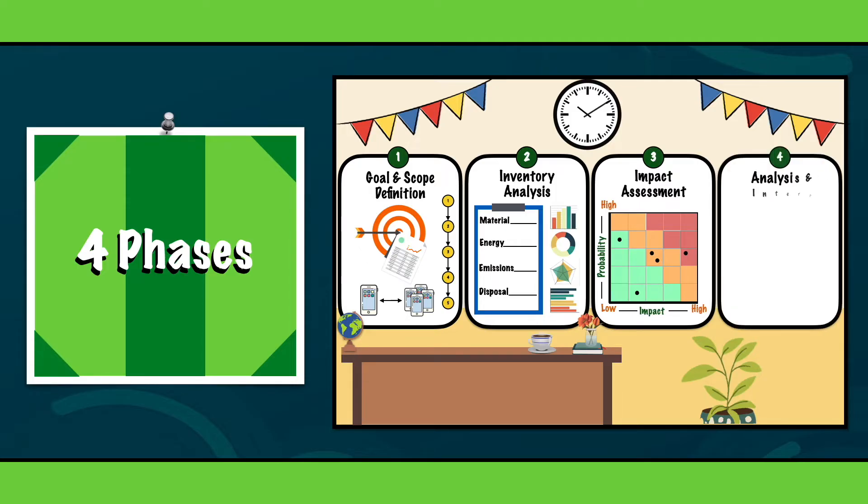Fourth, analysis and interpretation. The fourth phase involves interpreting and analyzing the findings to draw conclusions and make recommendations. It's crucial to communicate these results effectively to stakeholders, ensuring that the insights lead to actionable improvements.